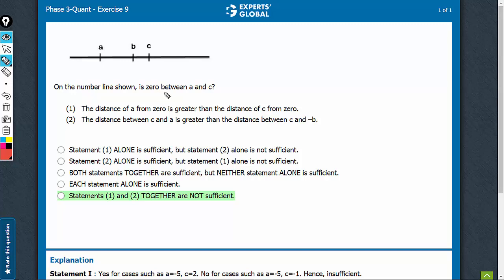The question is whether 0 is anywhere between A and C. Look at statement 1. This would be true for a case such as 0 lying here or 0 lying here. In this case, the answer would be yes. In this case, the answer would be no. So, not sufficient.